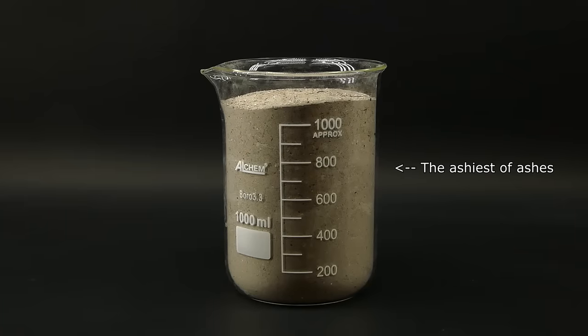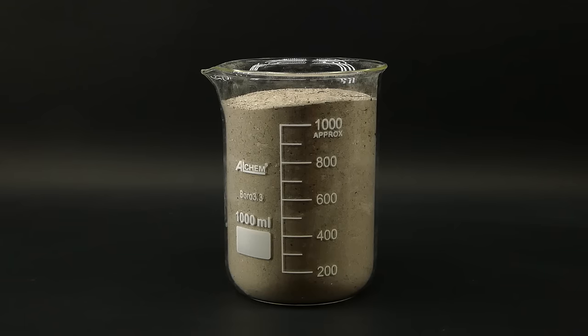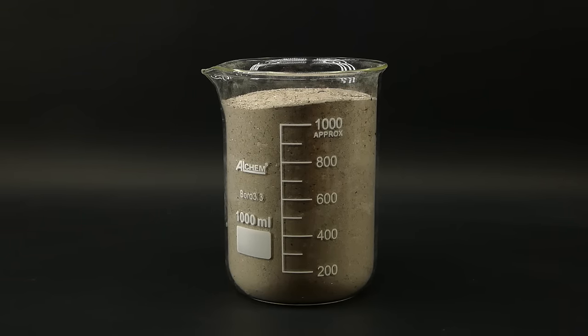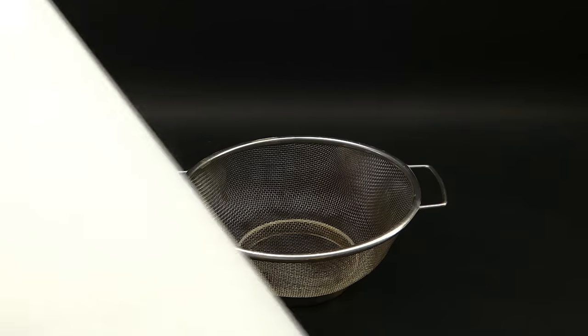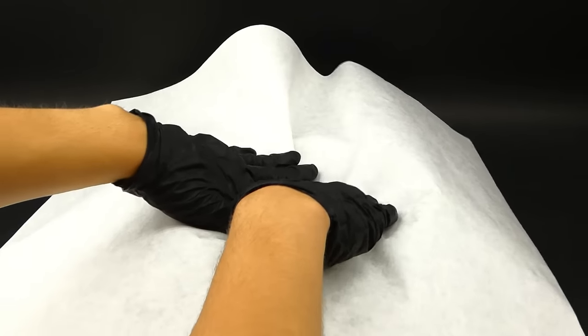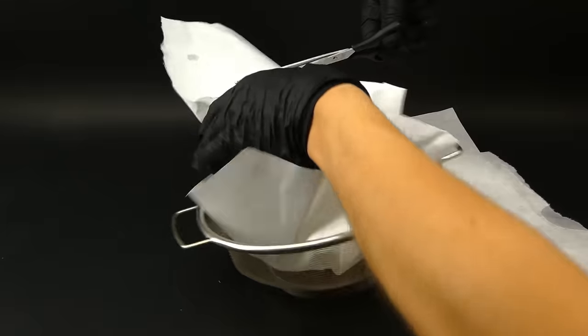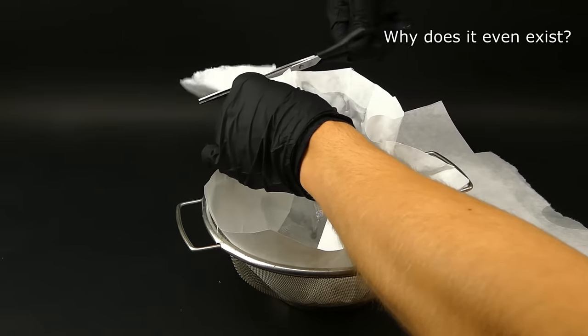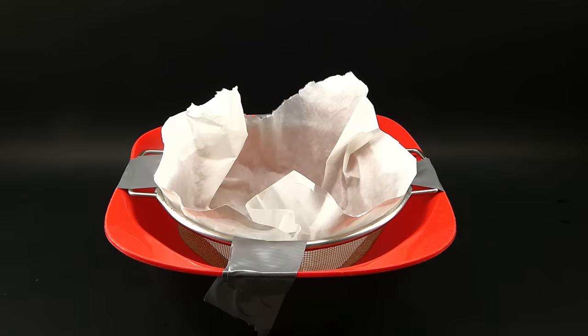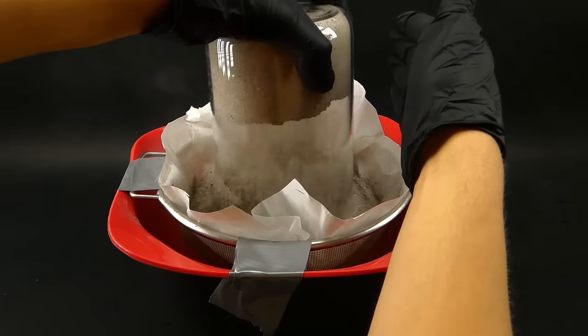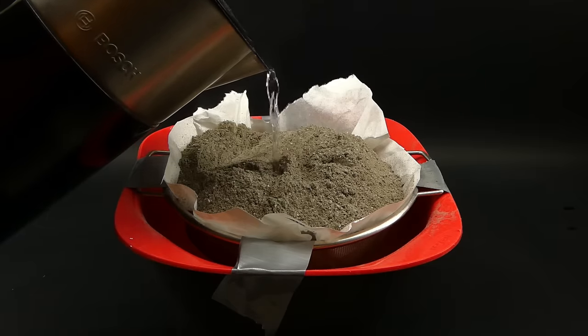Anyway before starting to extract the potash I had to get rid of these random pieces of charcoal in the ash. So I quickly got everything through a sieve, leaving me with this nice mountain consisting of 658 grams of pure analytical grade ash.